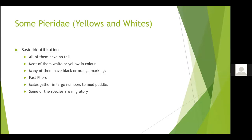Now I am coming to the Pierids — yellows and whites. The main feature of yellows and whites is none of them have tails. They are either yellow or orange in color, with one exception — the Wanderer, the Dark and the Indian Wanderer — they look closer to a Nymphalid than a Pierid but both are Pierids. Many of them have orange and black markings, they are fast flyers, and males often gather in large numbers and do mud puddling.